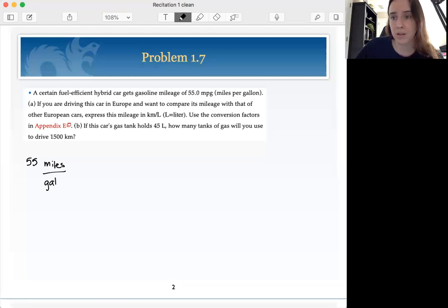So what we're doing now is we're going to be converting both units at the same time. We're going to do it all in one go. So things that we know from Appendix E, we know that one mile is equal to 1.609 kilometers. We know that one gallon is equal to 3.788 liters.